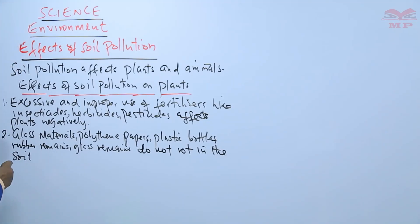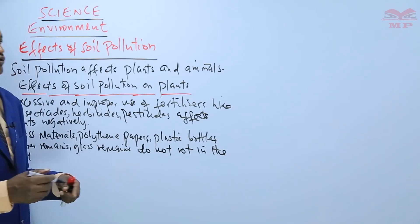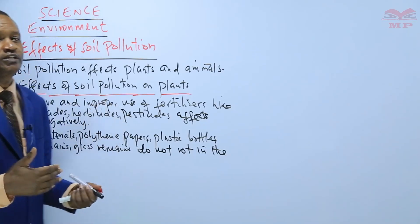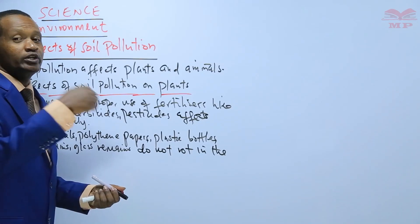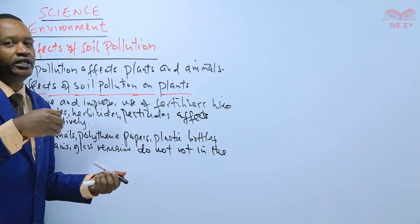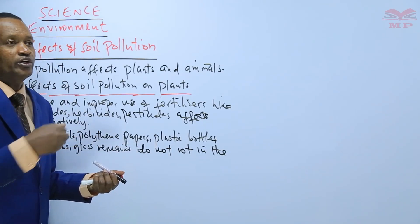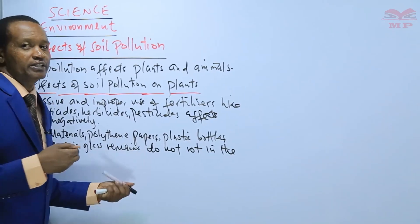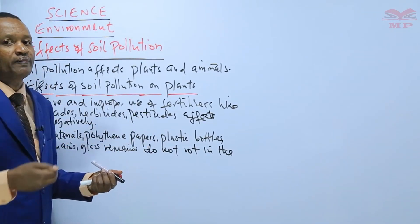That is the second point. The third effect is related: oil spills and polythene papers block air spaces. These materials thrown into the soil also cause soil pollution. Oil spills interfere with the proper circulation of air in the soil, together with the polythene papers, they interfere with proper circulation of air in the soil.